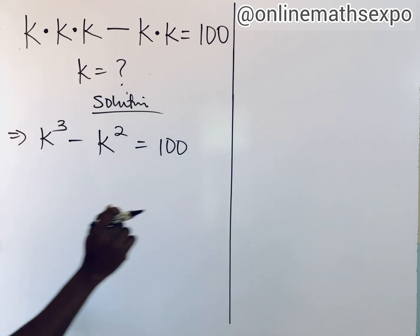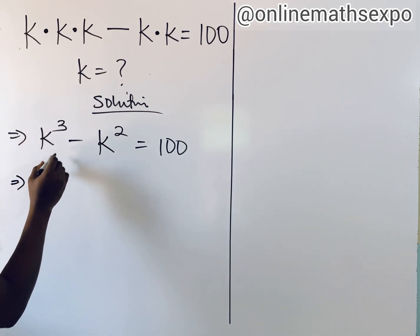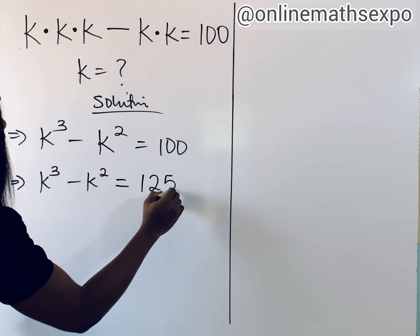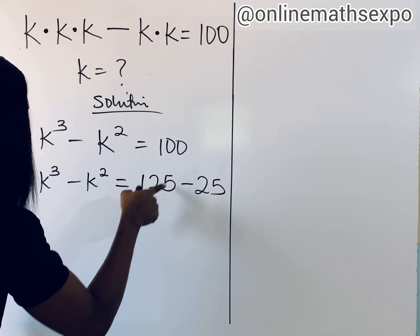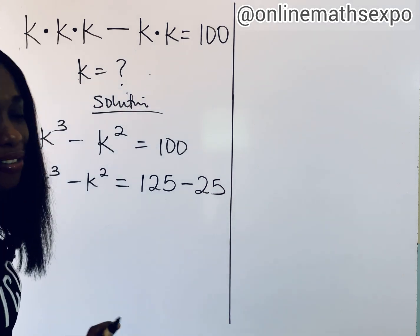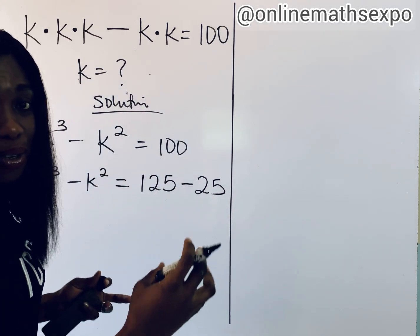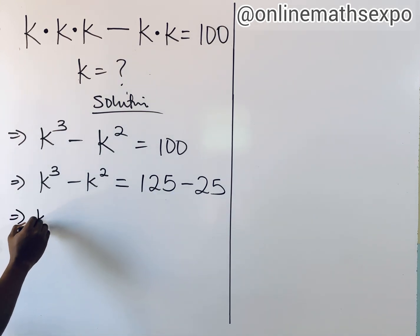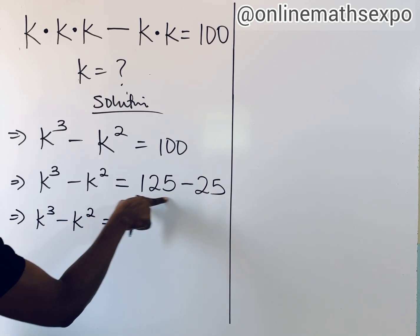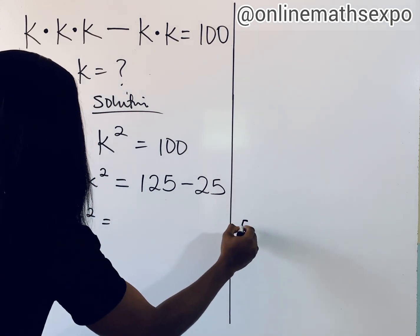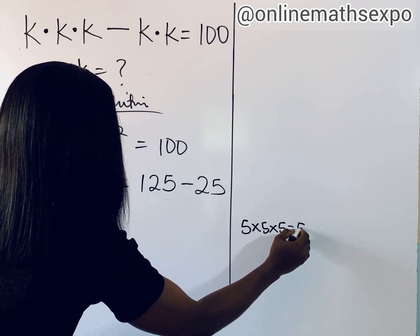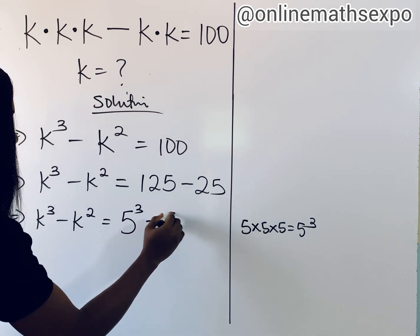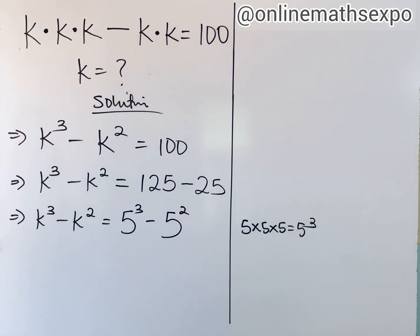Now, 100 has many ways to represent it. We can write k³ - k² = 125 - 25, since subtracting those gives 100. We have a reason for choosing this. We know that 125 is 5 multiplied three times, so that's 5³, and 25 is 5 multiplied two times, so that's 5².